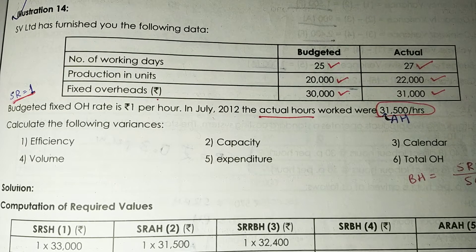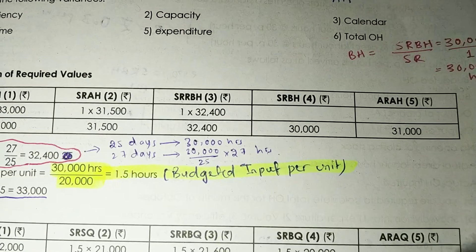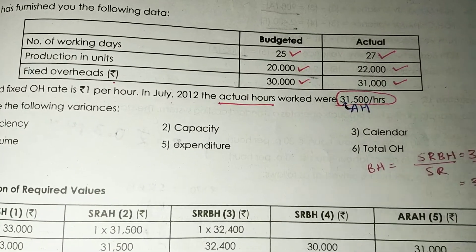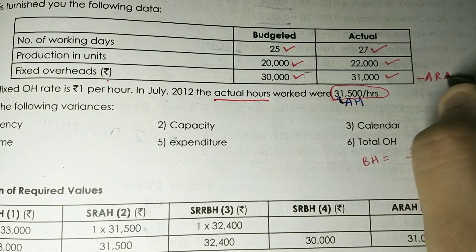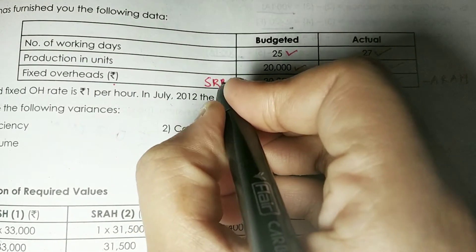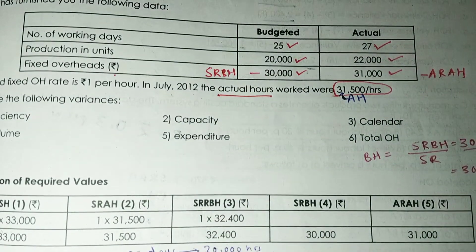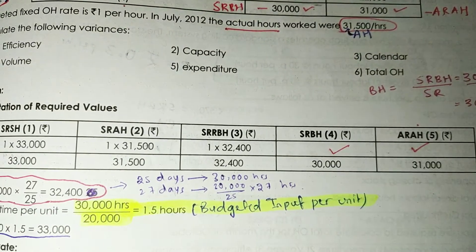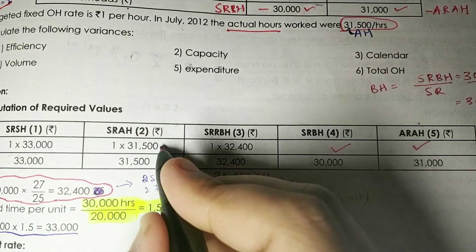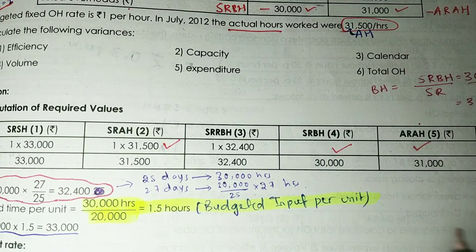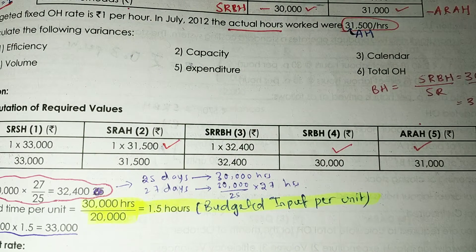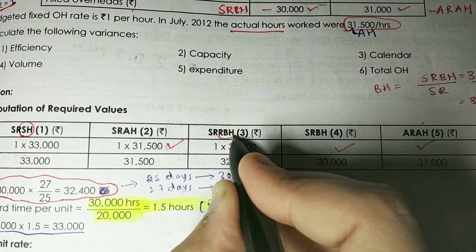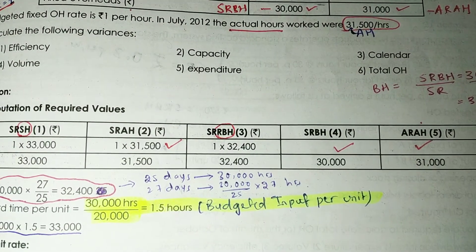Look at the table and identify what we can calculate. The fixed overhead already given is your ARAH and your SRBH. You can also calculate SR × AH because SR is given and AH is given. So there are two things left to calculate: SH (standard hours for actual output) and RBH (revised budgeted hours).